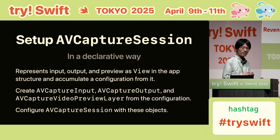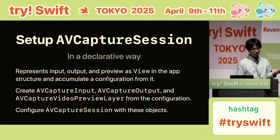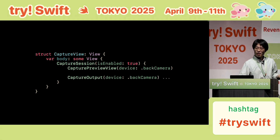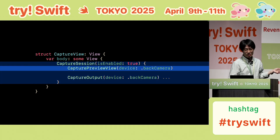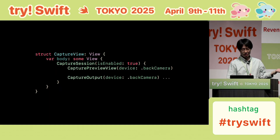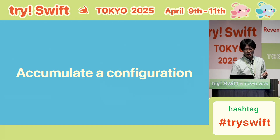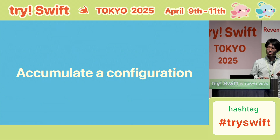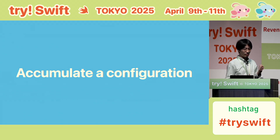Since a SwiftUI view represents application structure, we could represent configuration within the view as well, then use that configuration to set up the session. Here's the session view — inside it, we declare the preview and capture output, both configured for the back camera. This structure describes how the camera should be set up. Now comes the challenge: how do we collect all these configurations, represented as child views, to configure the session?